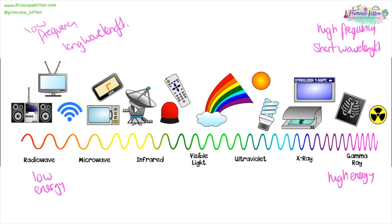Radio waves can be used for radio communications. Microwaves can be used for mobile phones and for heating food. Infrared is used for things like the light on your remote control and for heat sensing. Visible light is used for cameras and your eye. Ultraviolet can be used for detecting things like fake money. X-rays are used for broken bones. And gamma rays can be used for treating cancers or sterilizing things like killing bacteria.